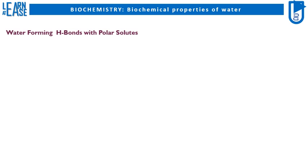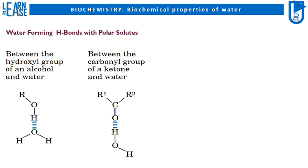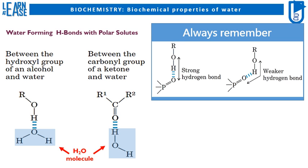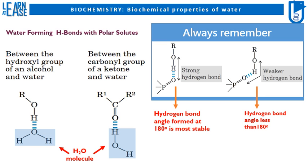Water forming H bonds with polar solutes is shown in the image. The image on the left shows that water forms H bonds with hydroxyl group of an alcohol, and the second similar image on the right shows water forming H bonds with carbonyl group of a ketone. An essential concept to remember here is that hydrogen bonds formed at an angle of 180 degrees are most stable. Such hydrogen bonds are considered strong hydrogen bonds, whereas hydrogen bonds formed at an angle less than 180 degrees are considered unstable weak bonds.